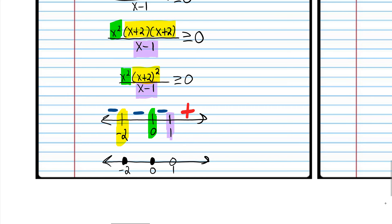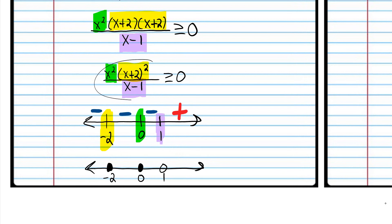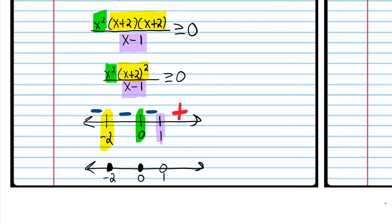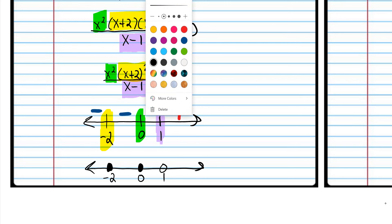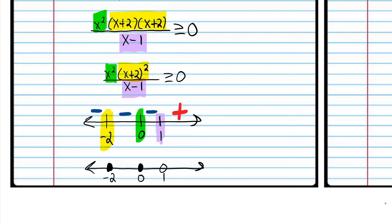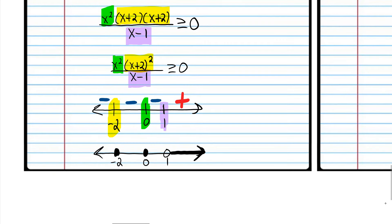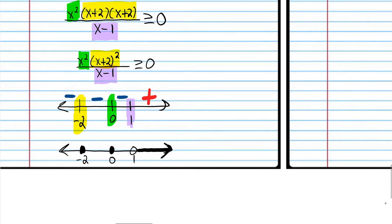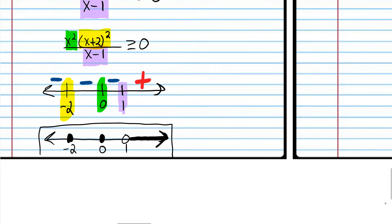You plug in one and you get an undefined expression, so we're looking for x values that make this expression greater than or equal to zero. If you plug in one you don't get anything less than, greater than, or equal to anything — it's undefined, so that cannot be a solution. We're going to write an open dot for one. We want to know where this expression is greater than or equal to zero, so that's where it's positive.